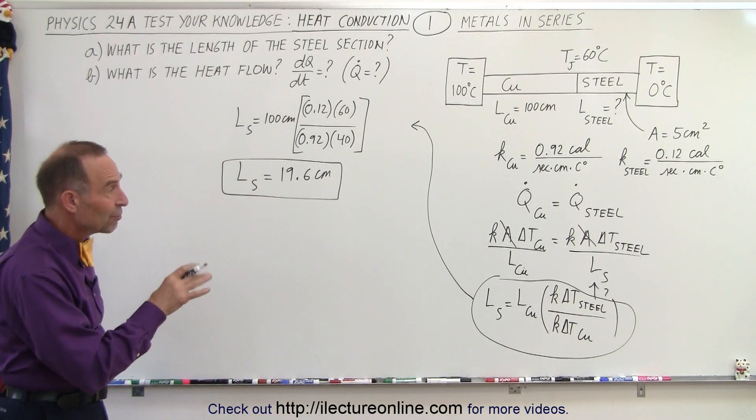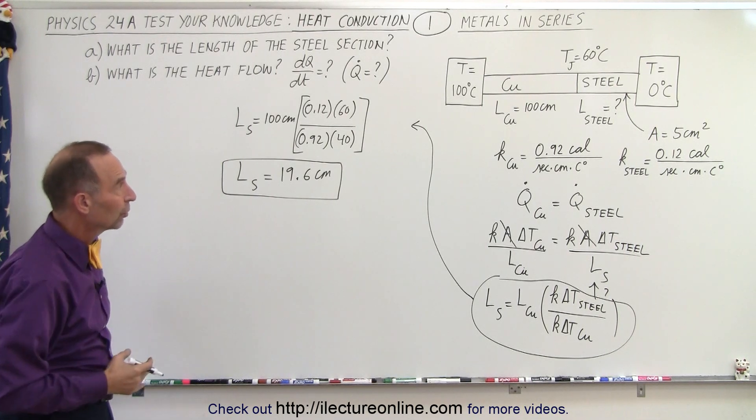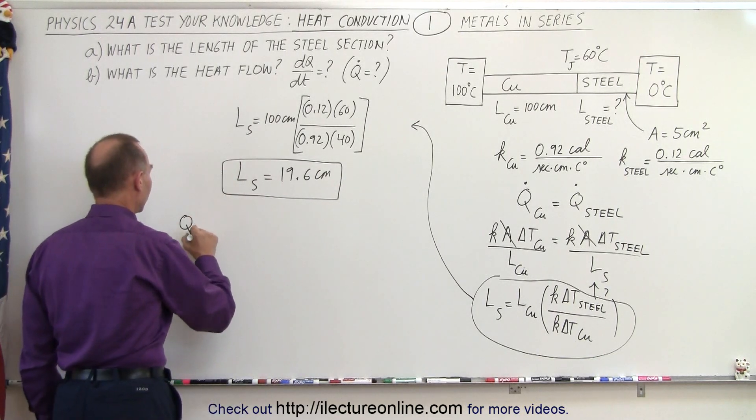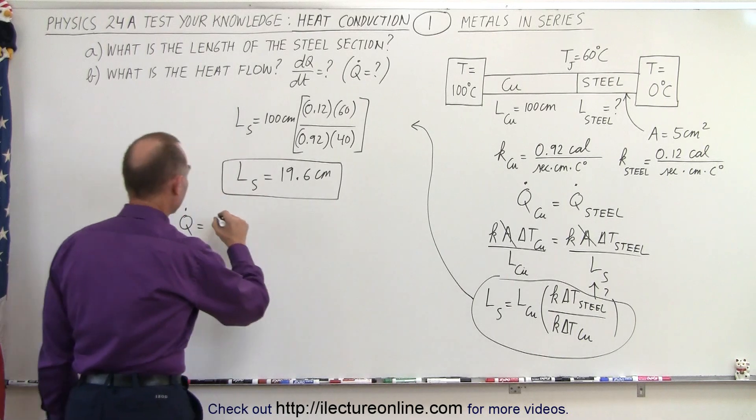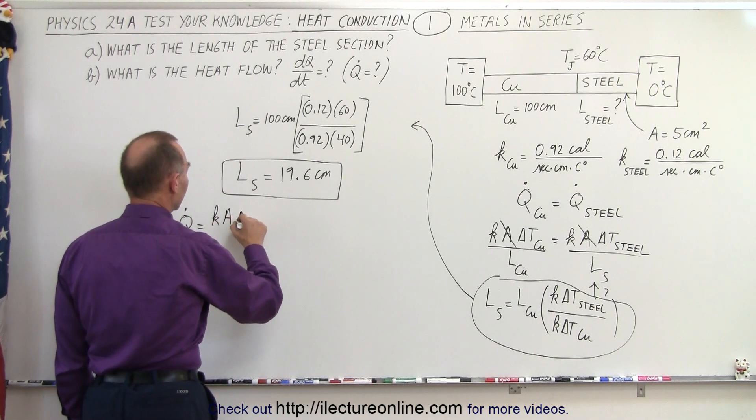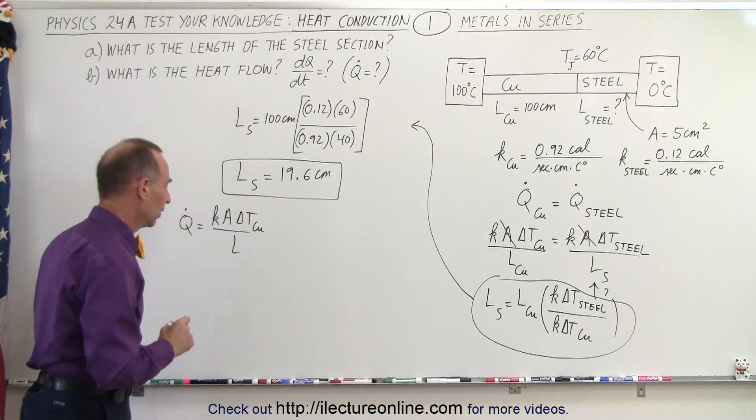Now we need to figure out the amount of energy, the amount of heat flow that flows through the system, through the copper and the steel pipe. So we can say q dot is equal to k times A times delta t divided by the length. And let's take the copper portion.